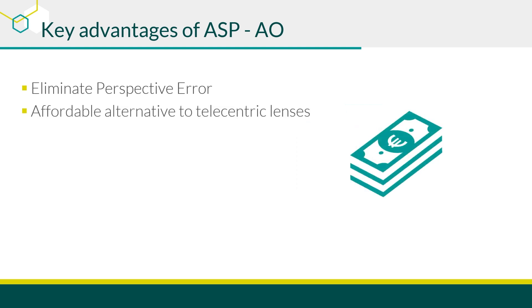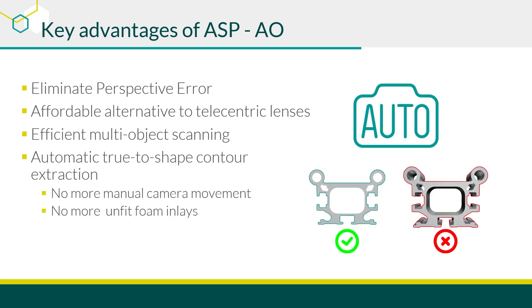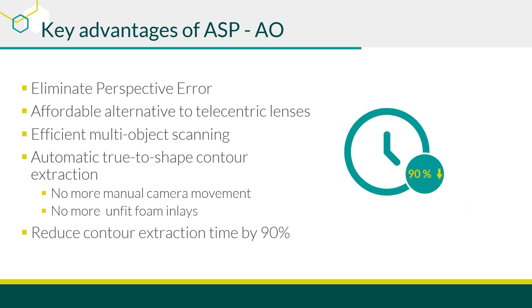Unlike expensive telecentric lenses, which are impractical for large objects and challenging for varying depths, the Area Scan Portal offers a cost-effective solution without sacrificing accuracy. With a 600 by 420 mm working area, the Area Scan Portal allows you to scan multiple objects simultaneously, increasing productivity and efficiency. The automated process simplifies contour extraction and ensures accurate results with a single click, eliminating the need for manual adjustments, reducing contour extraction time by up to 90%.